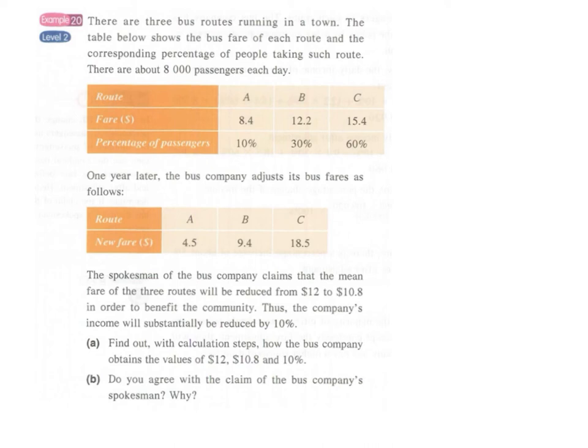Example 20 shows bus fares for three different routes A, B, and C with their corresponding percentages of passengers. The bus fare changes, and the spokesman of the bus company claims that the mean fare of the three routes is reduced from $12 to $10.80.